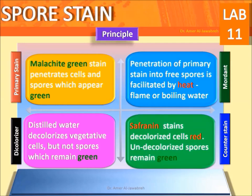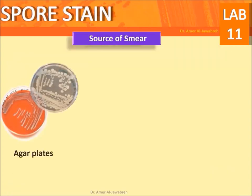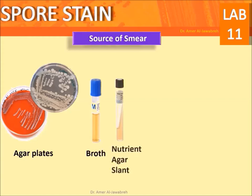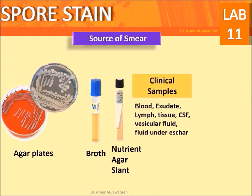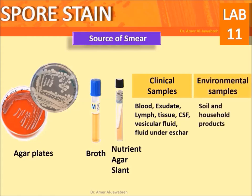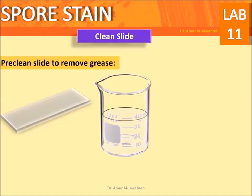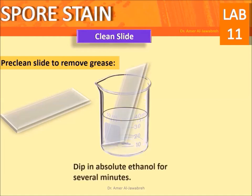The counterstain, safranine, stains decolorized vegetative cells red; undecolorized spores remain green. Sources of smear include: agar plates, broth, nutrient agar slants, clinical samples such as blood, exudate, lymph tissue, CSF, vesicular fluid, and fluid under eschar, as well as environmental samples such as soil and household products. Clean slides by dipping in absolute ethanol for several minutes, then dry or flame before use.